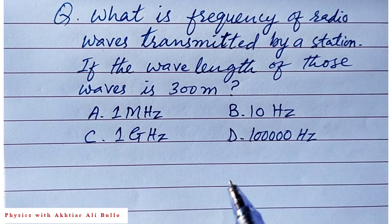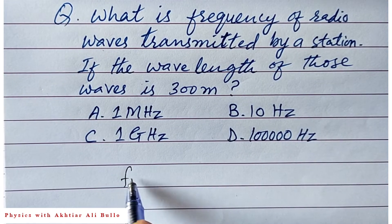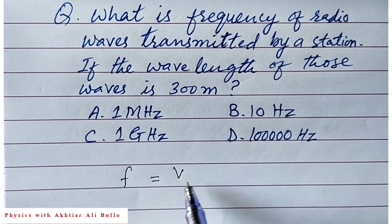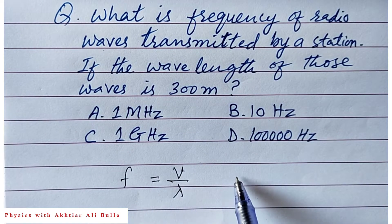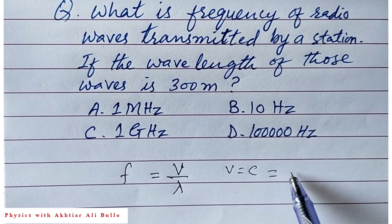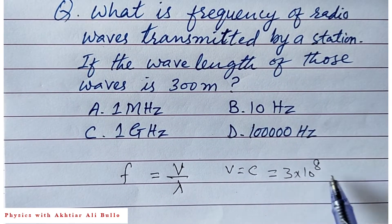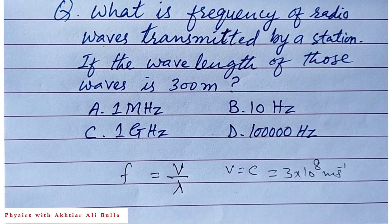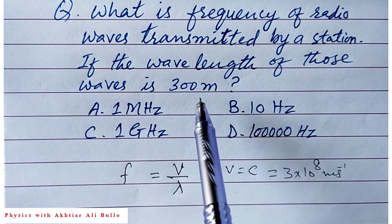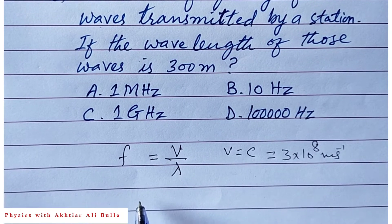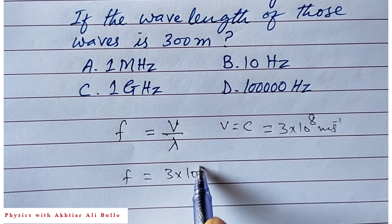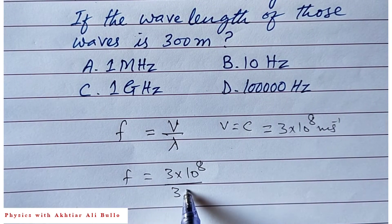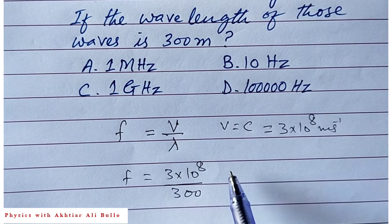Frequency is equal to wave velocity divided by wavelength. Here, the velocity will be equal to c, which is 3 × 10⁸ meters per second, because the velocity of radio waves is 3 × 10⁸ meters per second. The wavelength given is 300 meters. So frequency f = 3 × 10⁸ divided by 300.